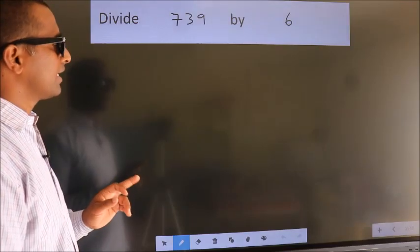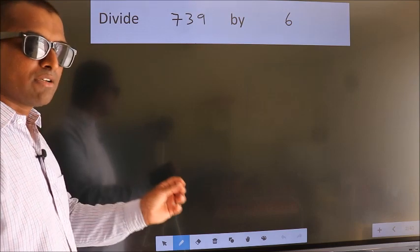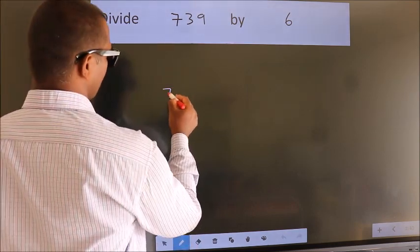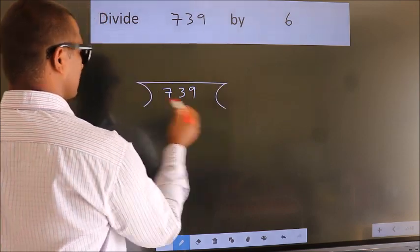Divide 739 by 6. To do this division, we should frame it in this way: 739 here, 6 here.